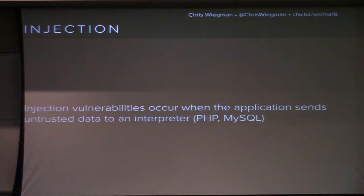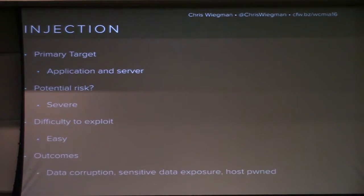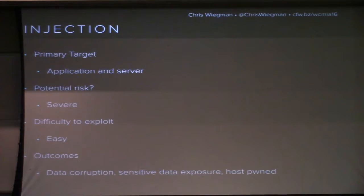The first code-level vulnerability is injection — simply a vulnerability that lets your server run code it's not supposed to run. This could be PHP or MySQL. There's a famous XKCD cartoon where the kid's name is 'Drop Tables with a semicolon,' which deletes the database — that's injection on a database. This can take over your whole server if done wrong. This is the type of thing where attackers leave PHP code in various places to set up new users, change your homepage so only Google can see the spam ads while you don't even know you're compromised.